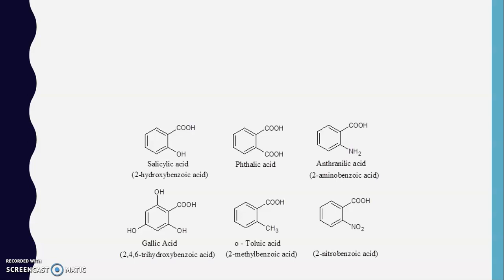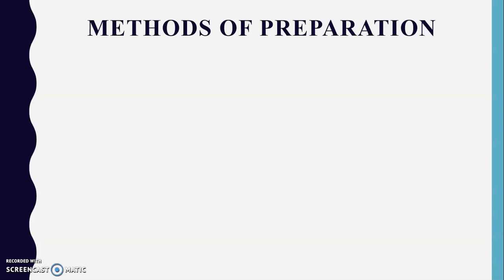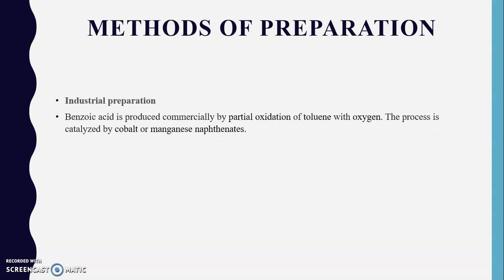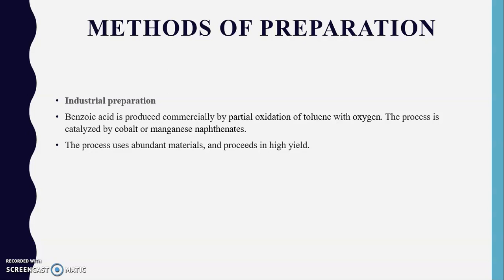There are seven methods used for the preparation of aromatic acids. The first is industrial preparation: benzoic acid is produced commercially by partial oxidation of toluene with oxygen, catalysed by cobalt or manganese naphthenate. This process utilizes abundant materials, proceeds in high yield, and is the most widely used method for commercial production of benzoic acid.